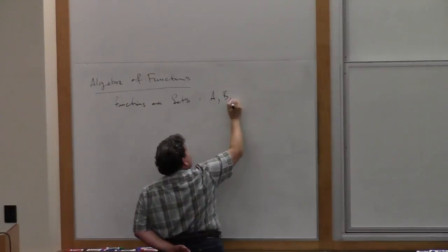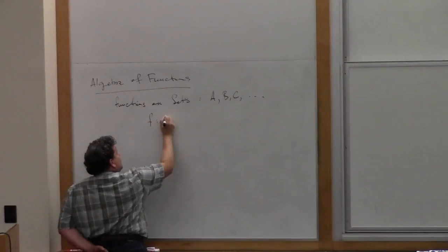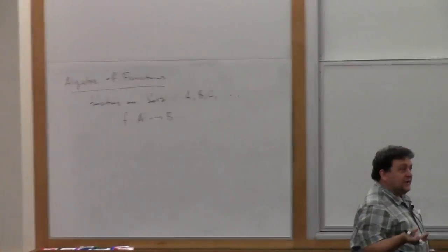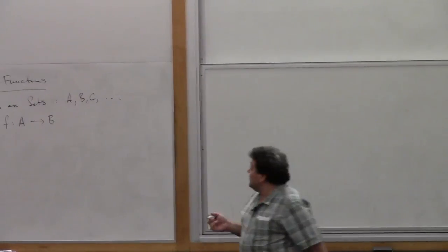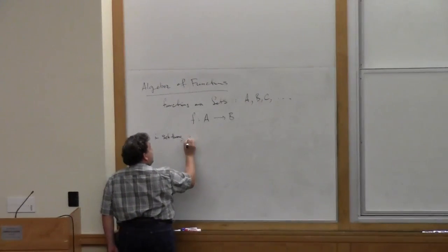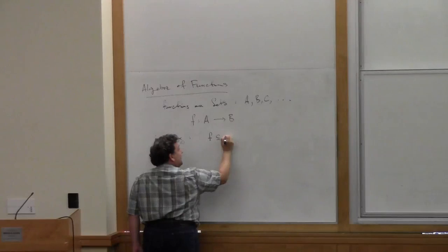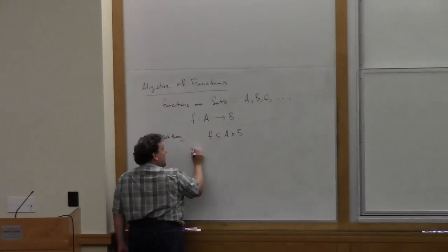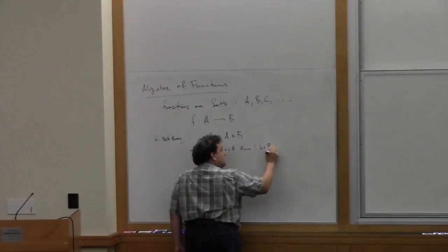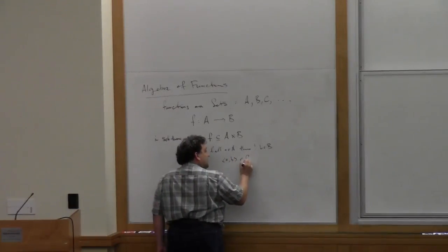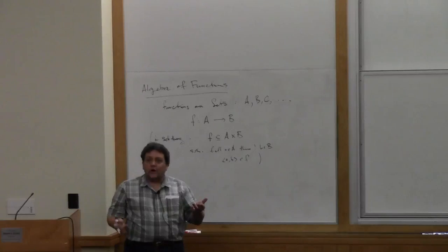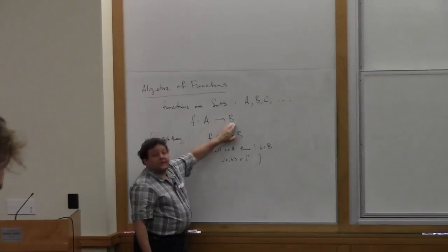Suppose our sets are written with capital letters. A function F going from A to B is a subset of the Cartesian product A × B, which is a relation on A × B, such that for all a in A, there's a unique b in B such that the pair (a, b) is an element of the relation F. That's the official definition, but we'll think of functions intuitively as taking an element of one set and returning an element of another set.